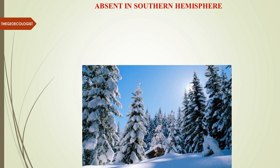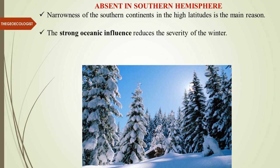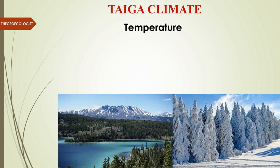The Taiga biome is completely absent in the southern hemisphere. The narrowness of southern continents in the higher latitudes is the main reason. The strong oceanic influence also reduces the severity of winter there. Coniferous forests are found only in mountainous uplands of southern Chile, New Zealand, Tasmania, and southeast Australia in the southern hemisphere, restricted to those uplands rather than forming a broad belt.